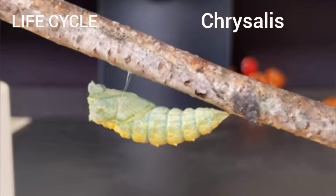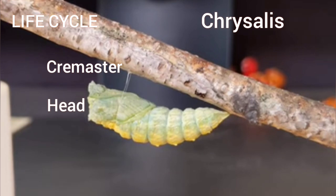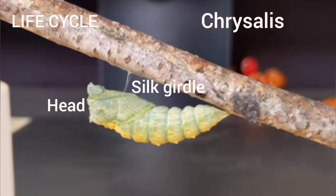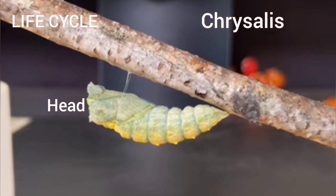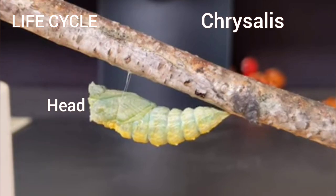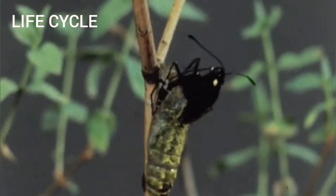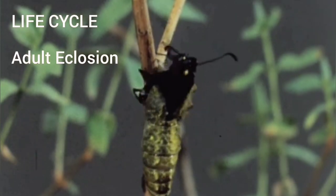The pupa is a chrysalis attached to twigs by a cremaster, with the head up, held by a silk girdle. After 8 to 9 days of the pupal period, the adult ecloses.